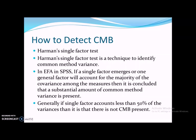How do we detect common method bias? This is the after-data-collection phase. When you collect data from your sources, you have to check whether your data is suffering from common method bias issues or not. The most important technique widely used for detecting common method bias is Harman's single factor test — a technique to identify the common method bias or variance in your data. We perform this test in exploratory factor analysis in SPSS.